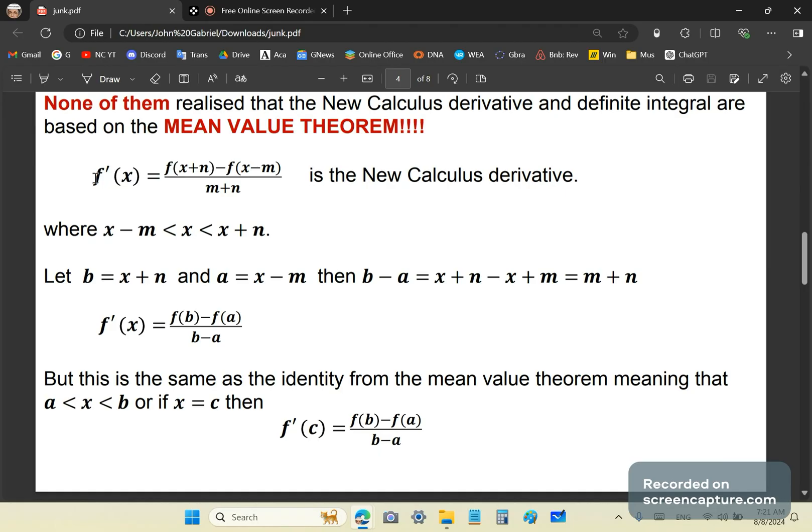So this is how the new calculus derivative is defined. And of course, one can also add the auxiliary expression to this. In other words, q of x, m, n. It doesn't have to be added because it's always zero. But in any case, in this expression...